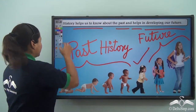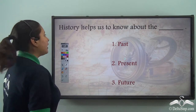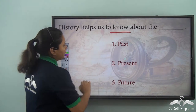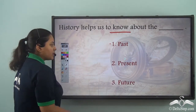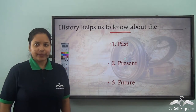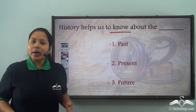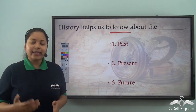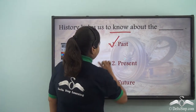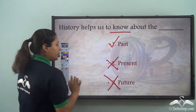Now let's look at a question. History helps us to know about the dash. Will it be option one — past, option two — present, or option three — future? History helps us to know about our past and it helps us to develop our future. So past is the correct option, and present and future are the wrong options.